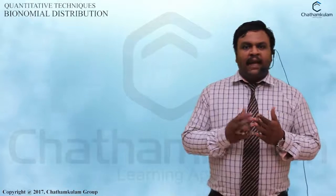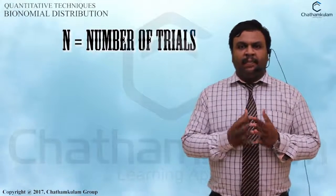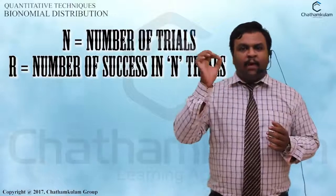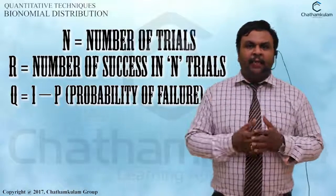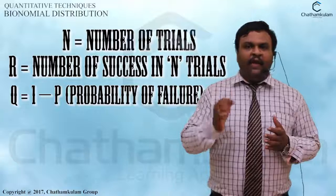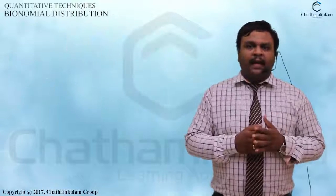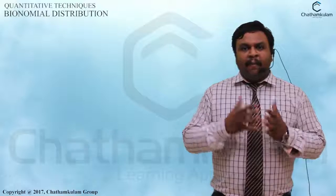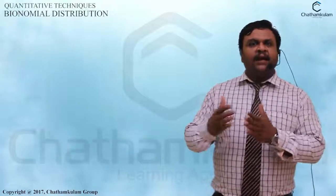Here, n indicates the number of trials, p indicates the probability of success, q indicates the probability of failure, and the small r indicates the number of successes in n trials.